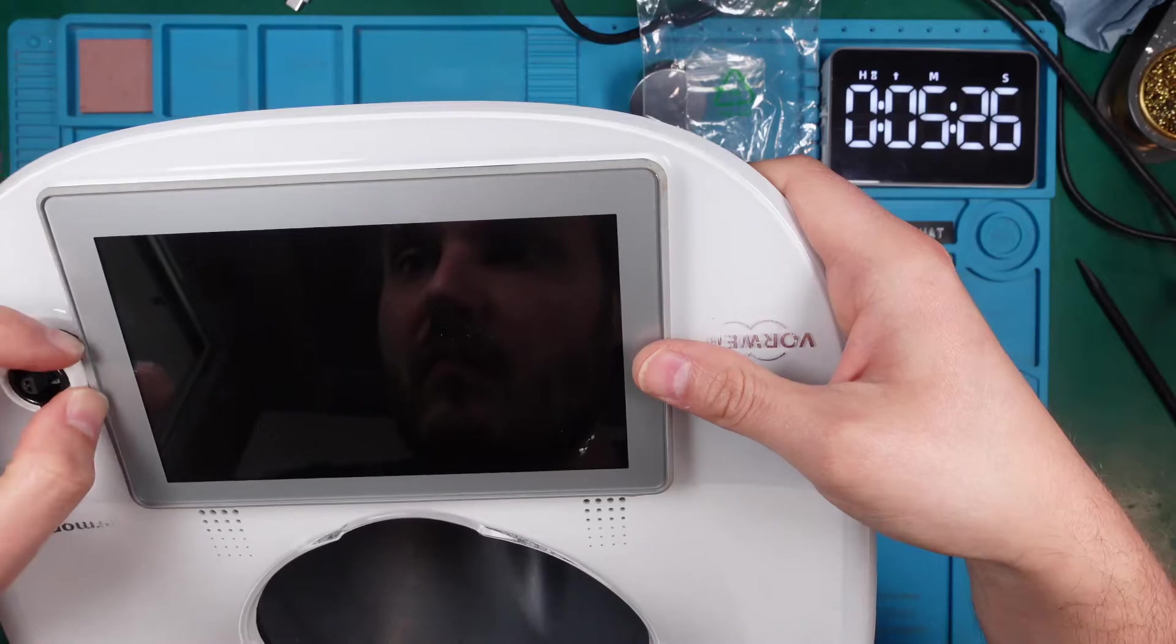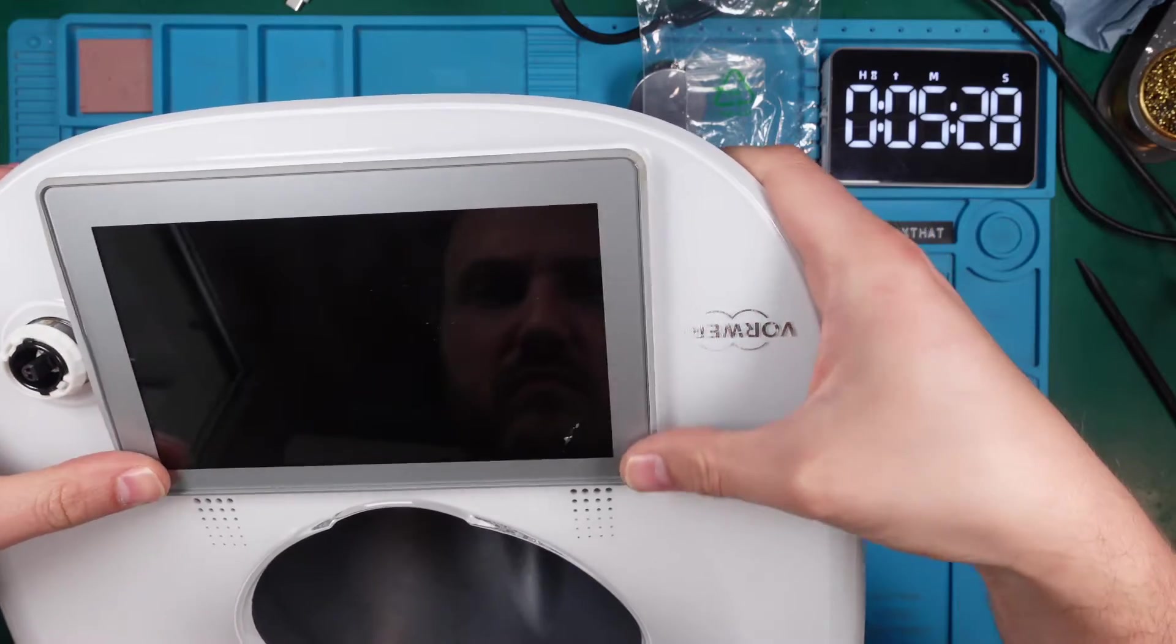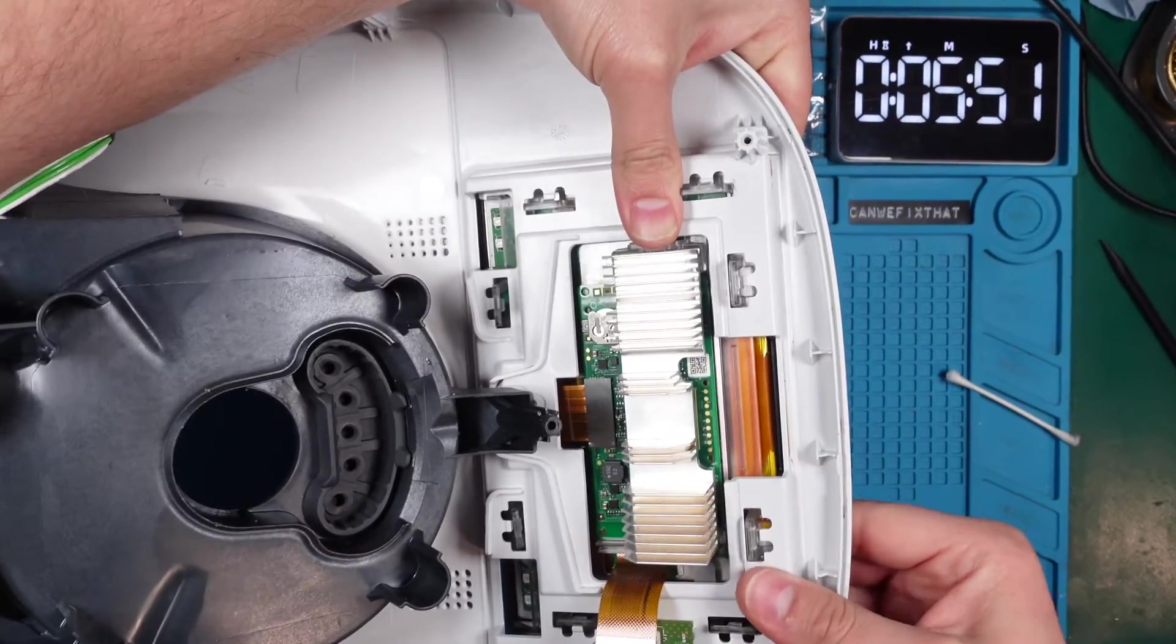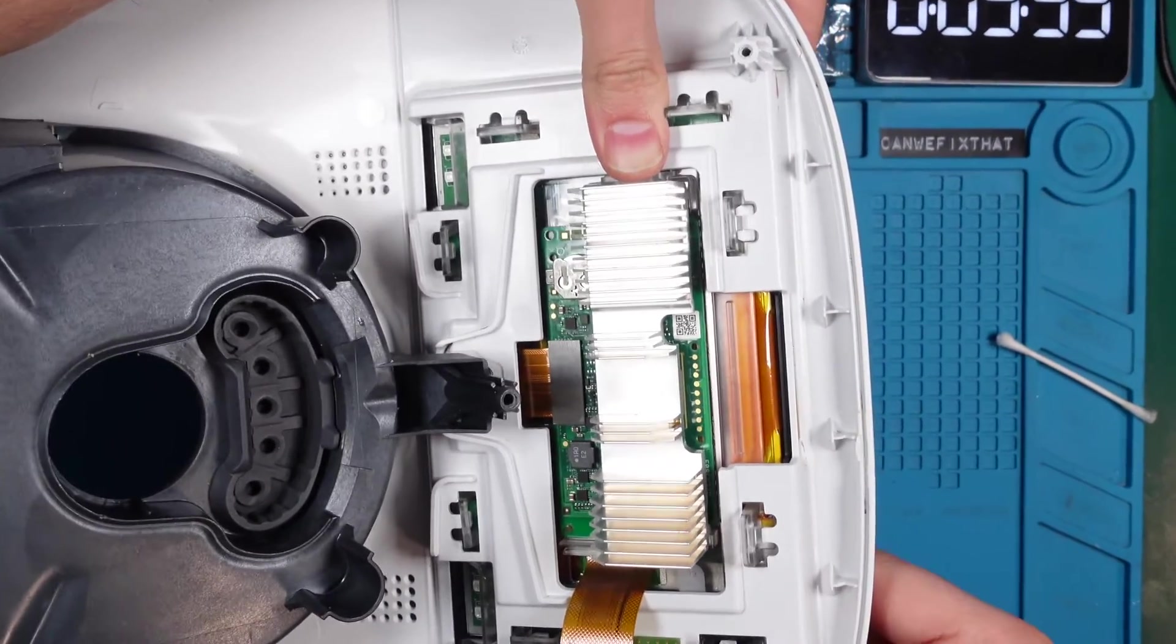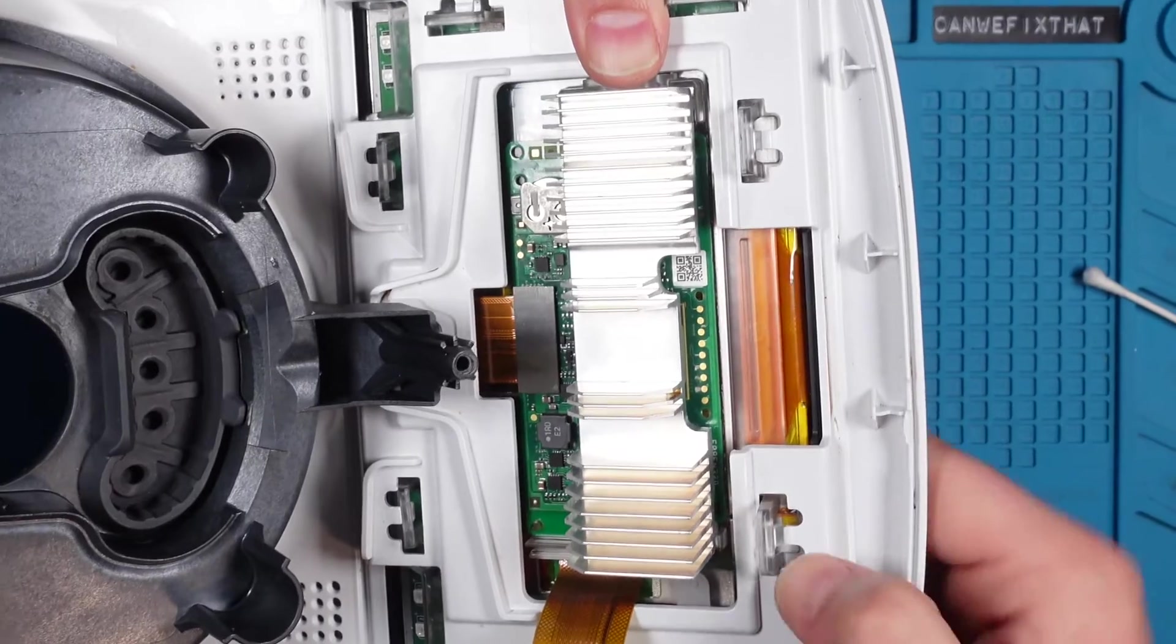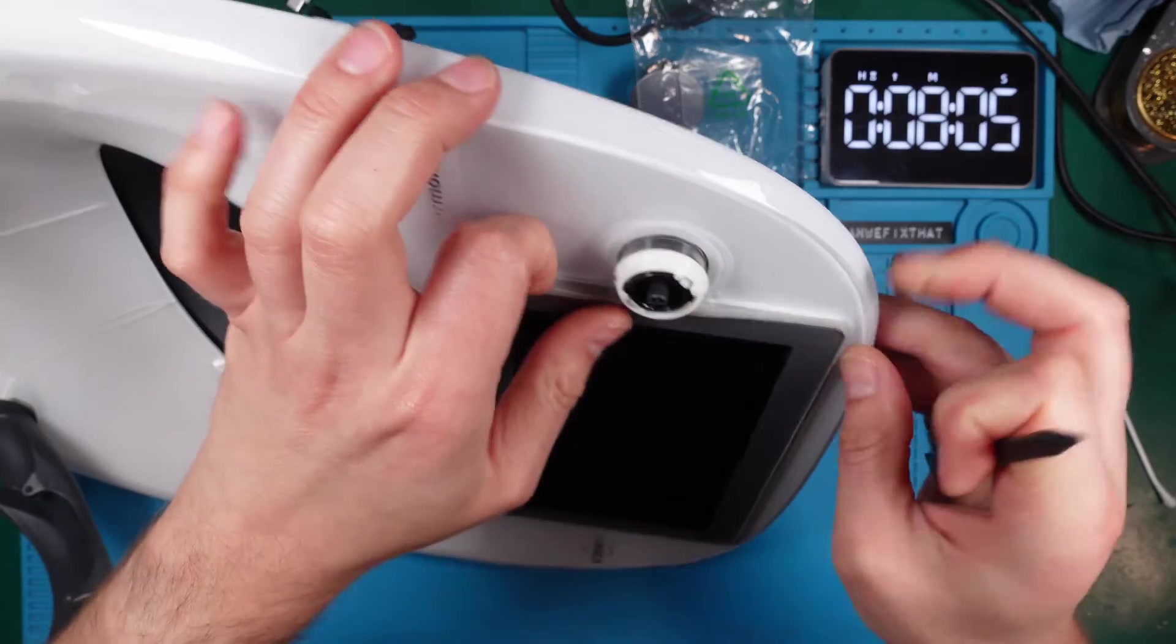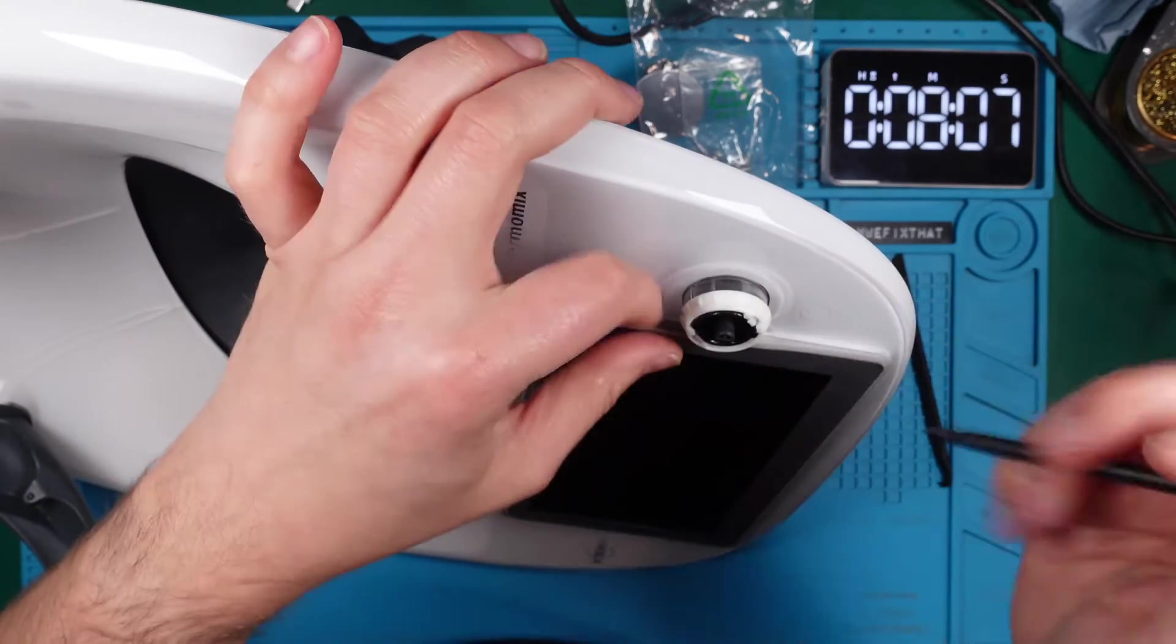You guessed right, I also showed this in the previous video. We have to make sure that every plastic clip clicks into place correctly for a secure fit in the end. Because the gasket on my new screen is a bit loose in some areas, it's a bit harder to align everything properly.